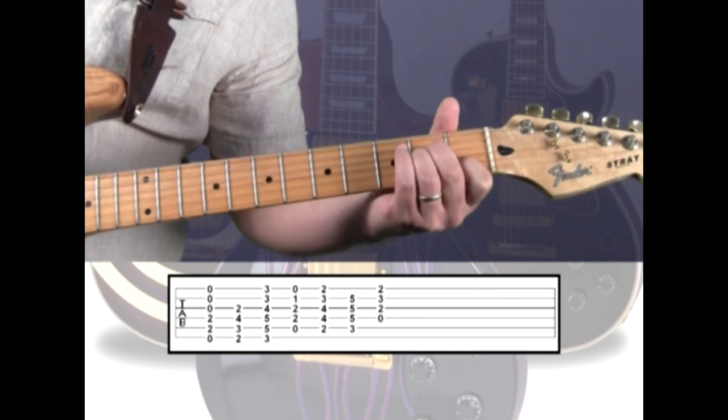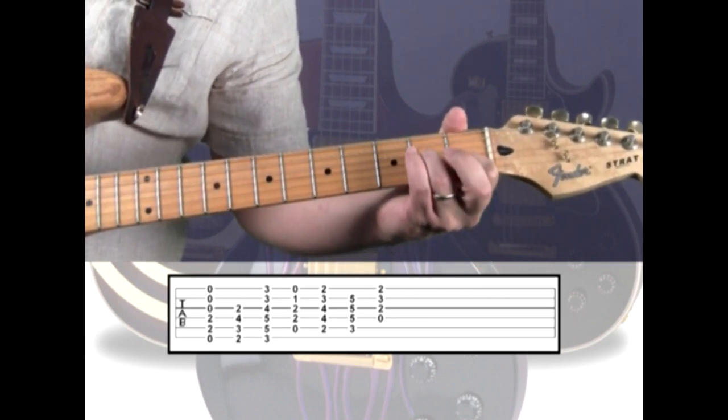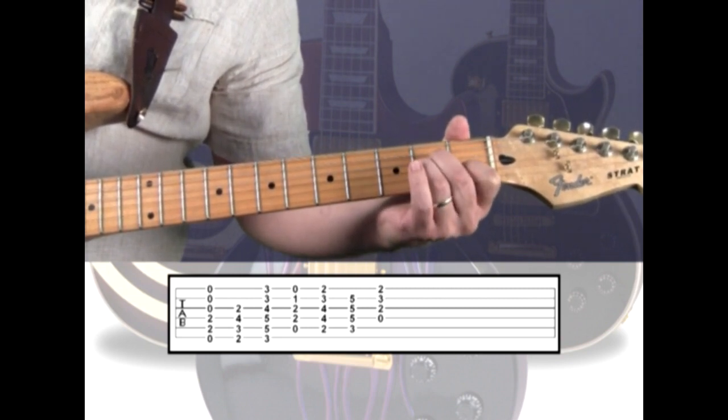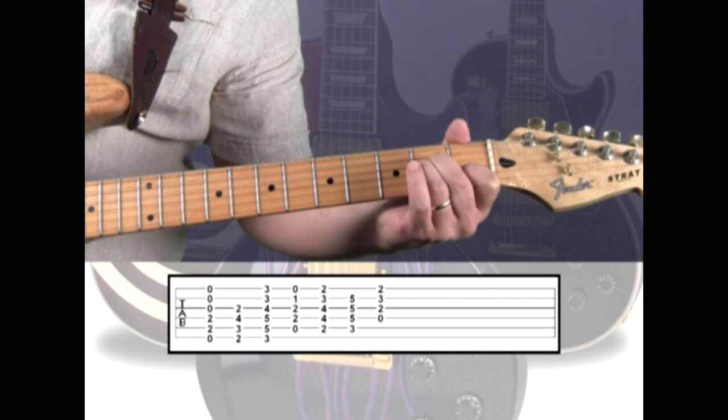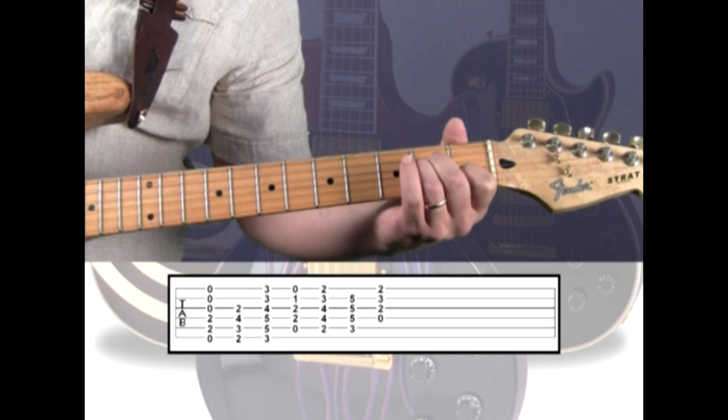A minor is 1st string open, 2nd string 1st fret with the index, 3rd string 2nd fret with the ring, and the 4th string 2nd fret with the middle. The 5th string is open.